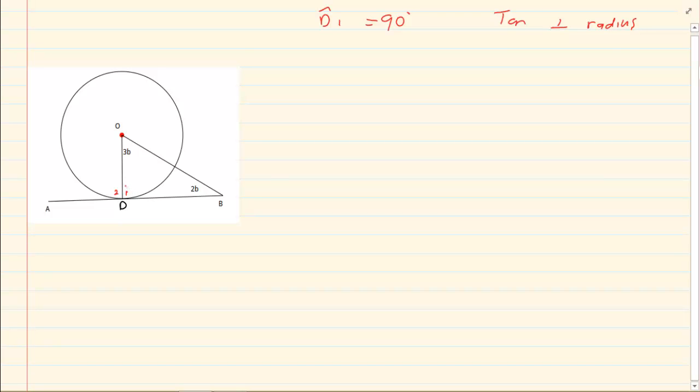Now if D1 is equal to 90 degrees, then 3B plus 2B is also equal to 90 degrees. Sum of angles of a triangle.